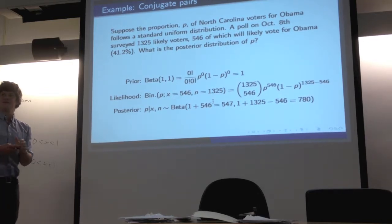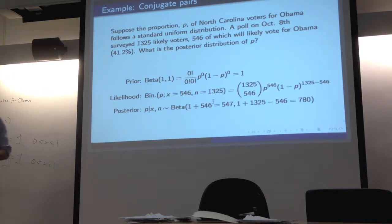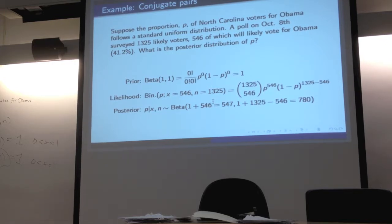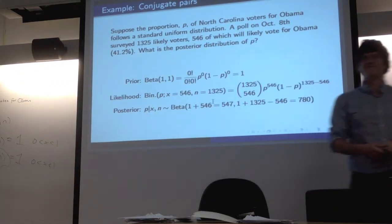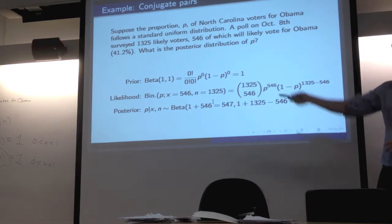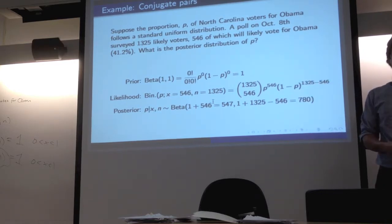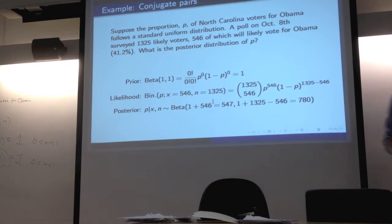Is there a common way of writing a uniform distribution in a different form? No, not really — that's really just a trick with the beta. One last question: what is the posterior telling you? It's your updated probability.